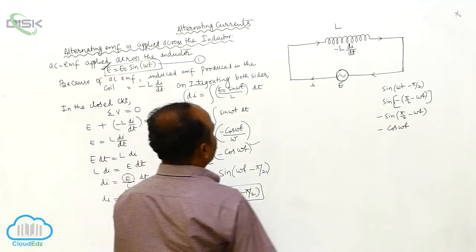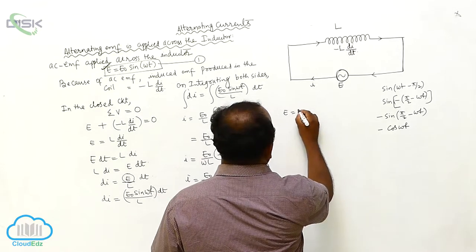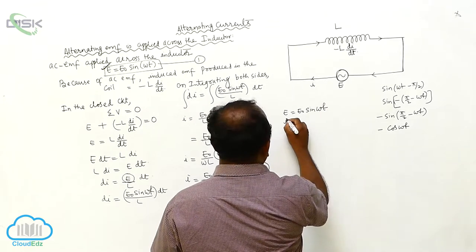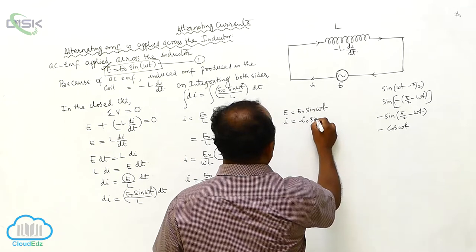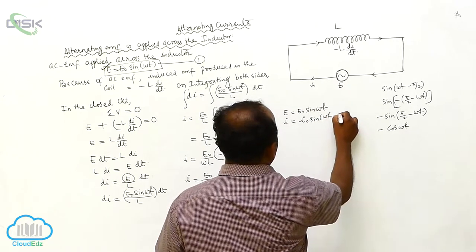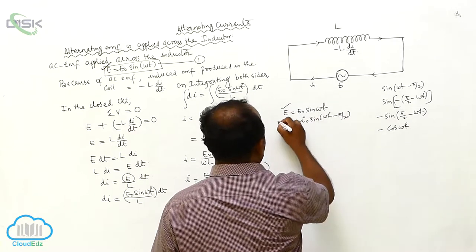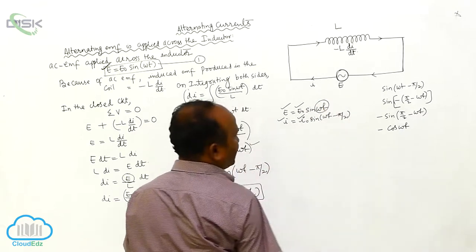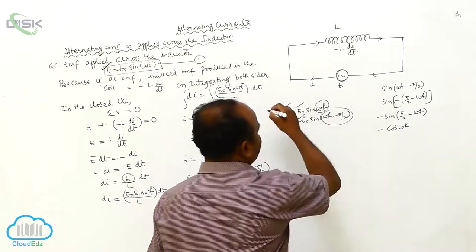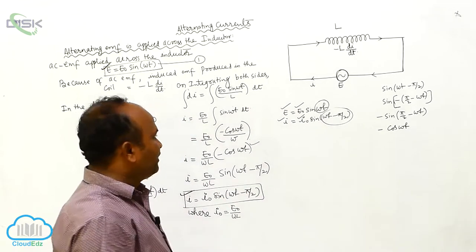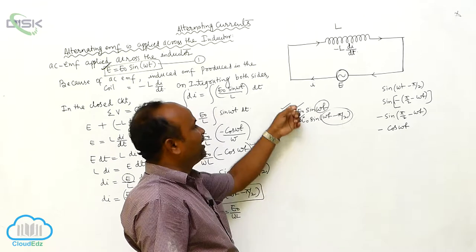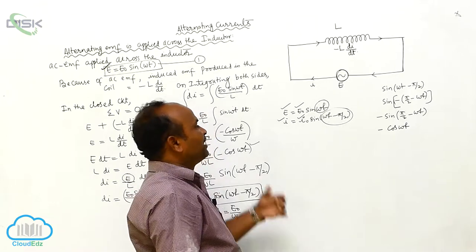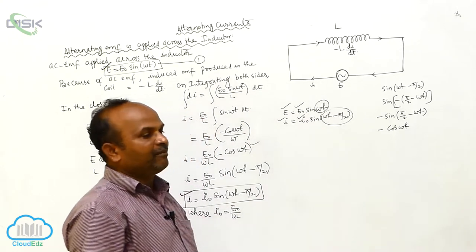Now, comparing the two equations: EMF is E = E₀ sin ωt, and current is I = I₀ sin(ωt − π/2). The instantaneous EMF has phase ωt, and the instantaneous current has phase (ωt − π/2). Therefore, the current is lagging the EMF by π/2, and π/2 is nothing but 90 degrees. Therefore, the current is lagging the EMF by 90 degrees.